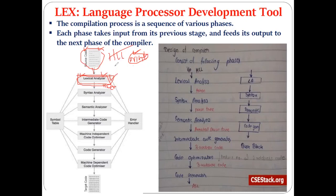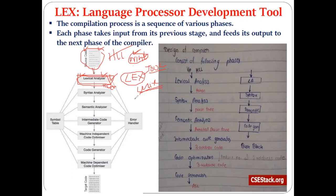The compiler is a system program, and designing and developing system programs is a very difficult task. To design and develop the phases of a compiler, different automatic tools are available in the market. One such tool is the Lex tool, which is provided by the Unix operating system and can be used to generate the lexical analyzer.